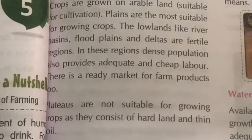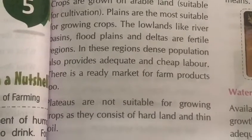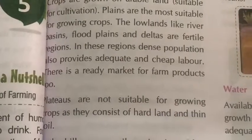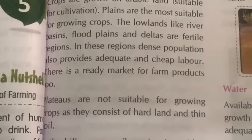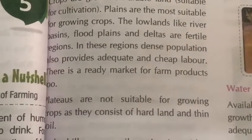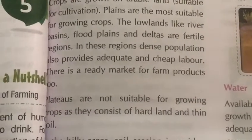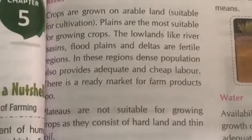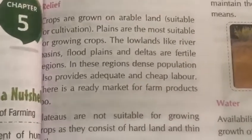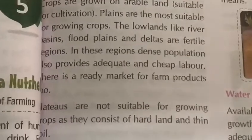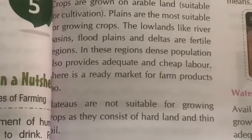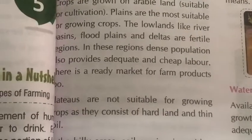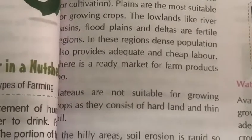Low lands like river basins, flood plains, and deltas are fertile regions. In these regions, dense population also provides adequate and cheap labor. There is a ready-made market for farm products too, because crops are grown on arable land suitable for cultivation.